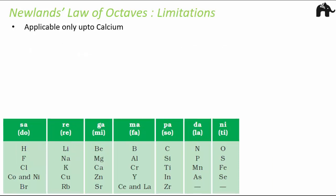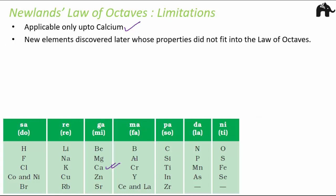Unfortunately, Newlands' Law of Octaves also had limitations. The first limitation: it was applicable only up to calcium. Looking at the table, only up to calcium did the law hold true. After calcium, we did not observe the similarity in properties of the eighth element and the first one. The second limitation: new elements discovered later did not fit into the law of octaves. During Newlands' time there were 56 elements, but as new elements were discovered, there was no place for them since they didn't fit the law. Even within those 56 elements, after calcium, the others were not following the law.